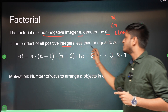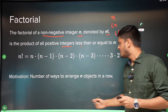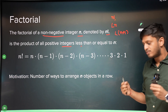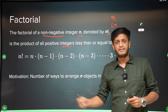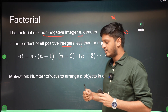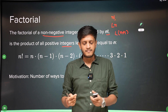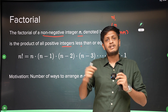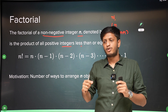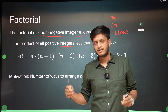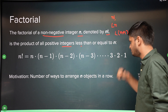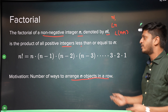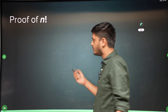It's the product of all positive integers less than or equal to n. The motivation behind it: factorial is used in arrangements. In the coming few videos I will explain what selection and arrangement means. For now, just know that factorial came into the picture when we wanted to count the number of ways to arrange things. The number of ways to arrange n objects in a row is n factorial.